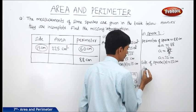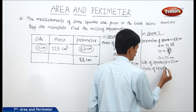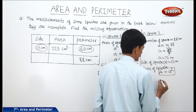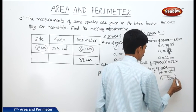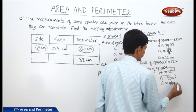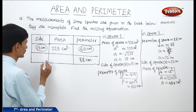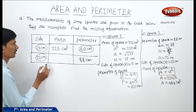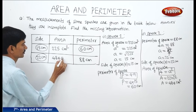Then we can find the area of square 2. Using the formula area equals side squared, A equals 22 into 22, which gives 484 centimeters squared. So the side is 22 centimeters and the area is 484 centimeters squared.